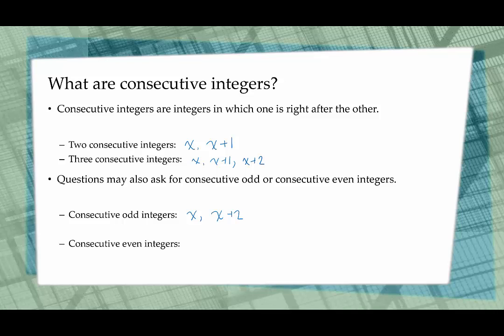For consecutive even integers, if we call the first one x — so that would be 8, then 10, which is 8 plus 2 — this would also be x plus 2. So even though we're talking about two different types, whether consecutive odd or consecutive even integers, we represent them both with x and x plus 2. Odd numbers are 2 away from each other: 1 is 2 away from 3, which is 2 away from 5.